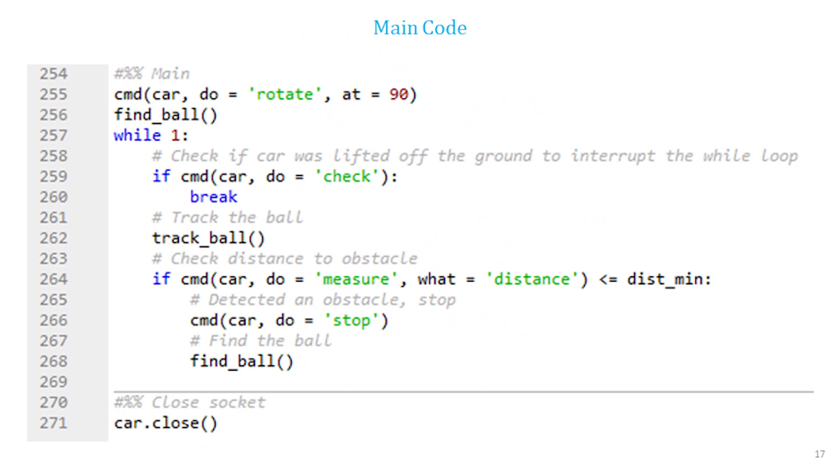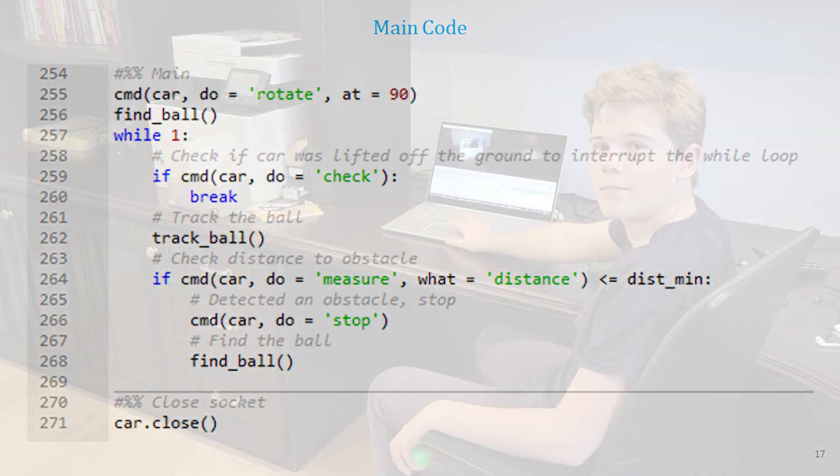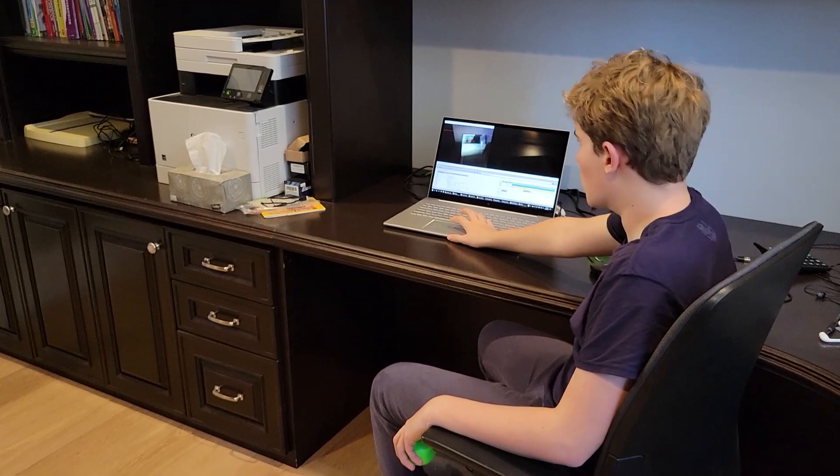The main part of the code looks very simple thanks to the use of functions. I start by rotating the car head straight then I execute the find_ball function. After that I start an infinite while loop inside of which I first check if the car was lifted off the ground then execute the track_ball function. Then measure the distance to an obstacle and stop the car if the distance is below dist_min. After stopping I execute the find_ball function and repeat the whole cycle again. Let's see how the code works.